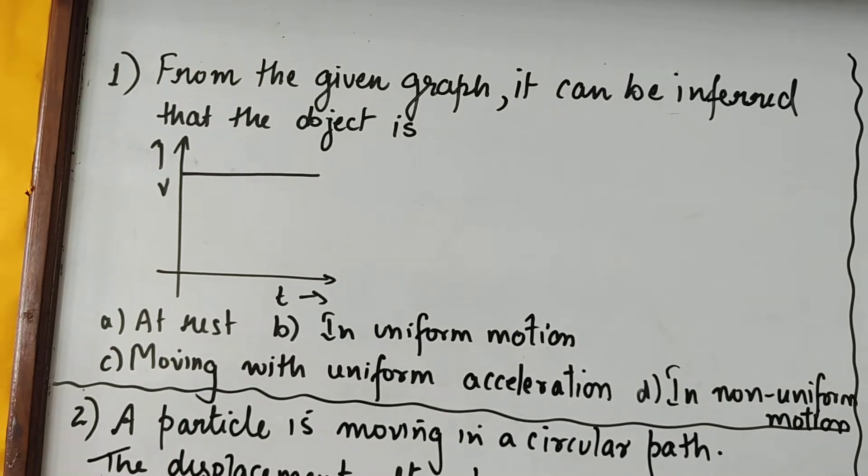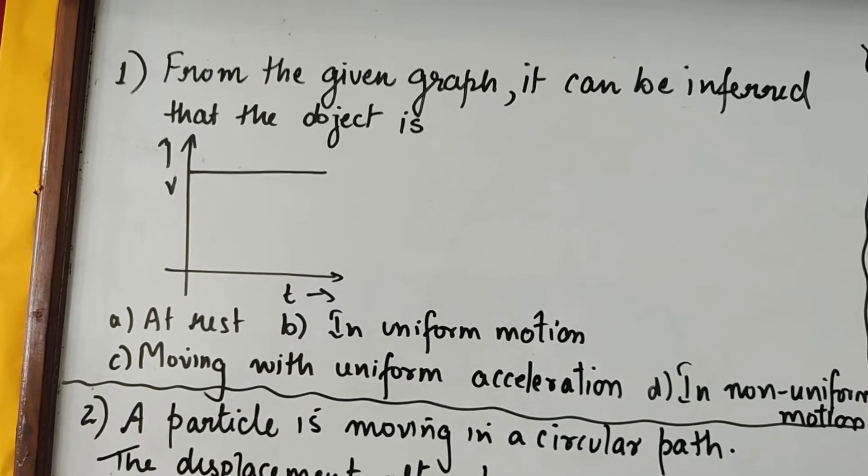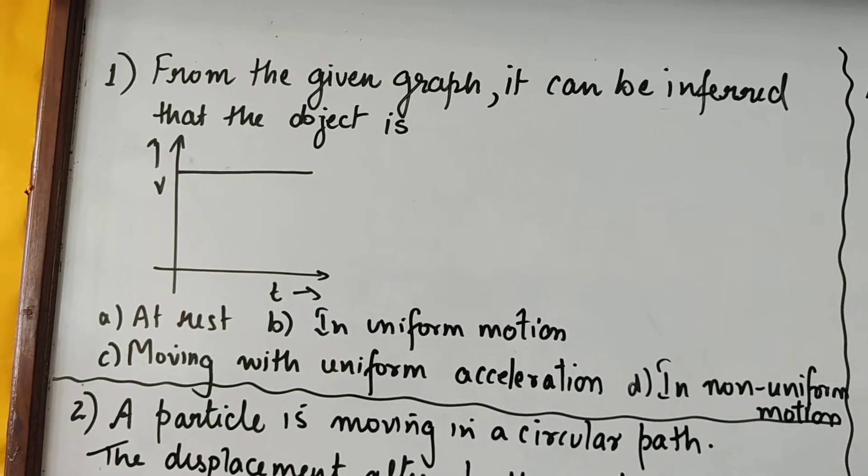Which means that the body is in uniform motion, because we know that in uniform motion, speed remains constant. So our correct option is B here.